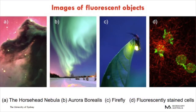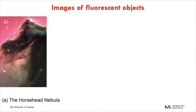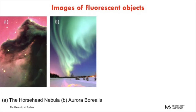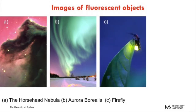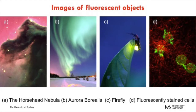Fluorescence can be found everywhere in the universe, but it is not at all commonplace. On this slide we're looking at images of fluorescent objects. The first is the Horsehead Nebula — the pink background is fluorescence from hydrogen, while the horse head shape is due to a dust cloud obscuring the fluorescence. The second image is of the Aurora Borealis, with fluorescence coming from nitrogen and oxygen in the atmosphere. The third is a firefly, where the fluorescence comes from luminol. The fourth is fluorescently stained cancer cells embedded in a collagen matrix. Both the Aurora Borealis and the firefly are easily seen by the naked eye, but magnification techniques are necessary to see the nebula or the fluorescently stained cells.